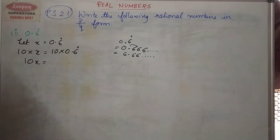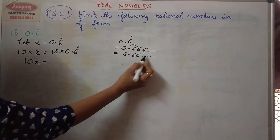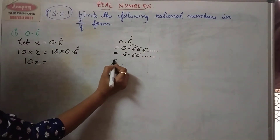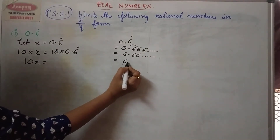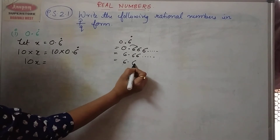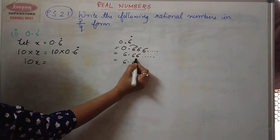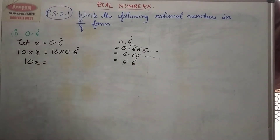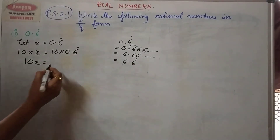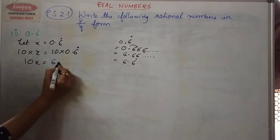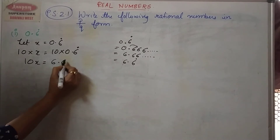Now 6.66 — since 6 is continuing here, instead of writing 6.66 I will write 6.6 dot. So let us write down 6.6 dot.